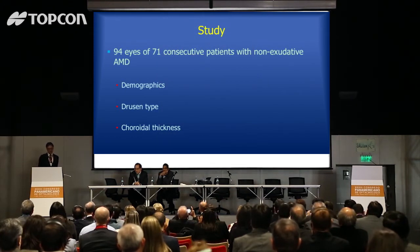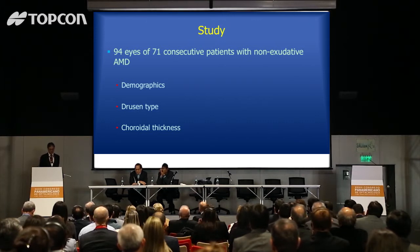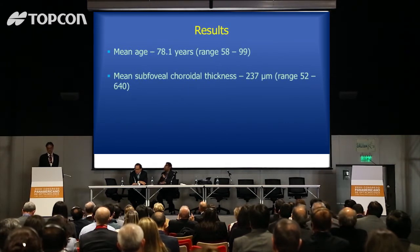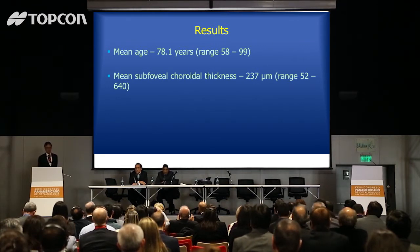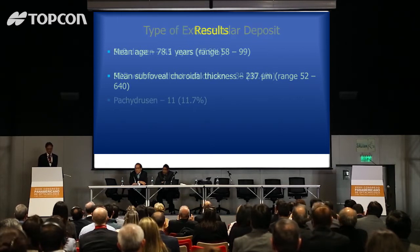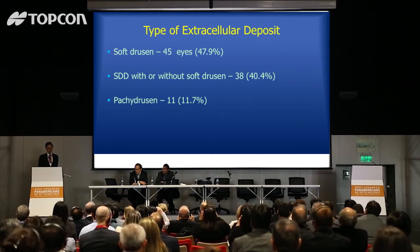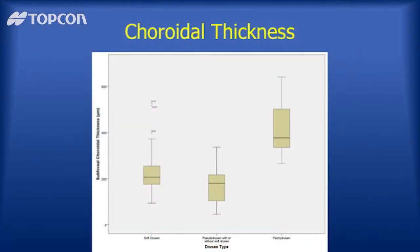To get an idea of how often these occurred, I looked at 71 consecutive patients with non-exudative AMD, 94 eyes, looking at demographics, drusen type, and choroidal thickness. I excluded patients with retinal surgery, uveitis, or central serous. The mean age was 78 years and mean choroidal thickness was about 240 microns, ranging from 52 to over 600 microns — essentially a 12-to-1 ratio. Soft drusen were found in 48%, pseudodrusen in about 40%, and pachydrusen in 11.7%. The pachydrusen patients indeed had thick choroids, whereas pseudodrusen patients generally had thinner choroids.